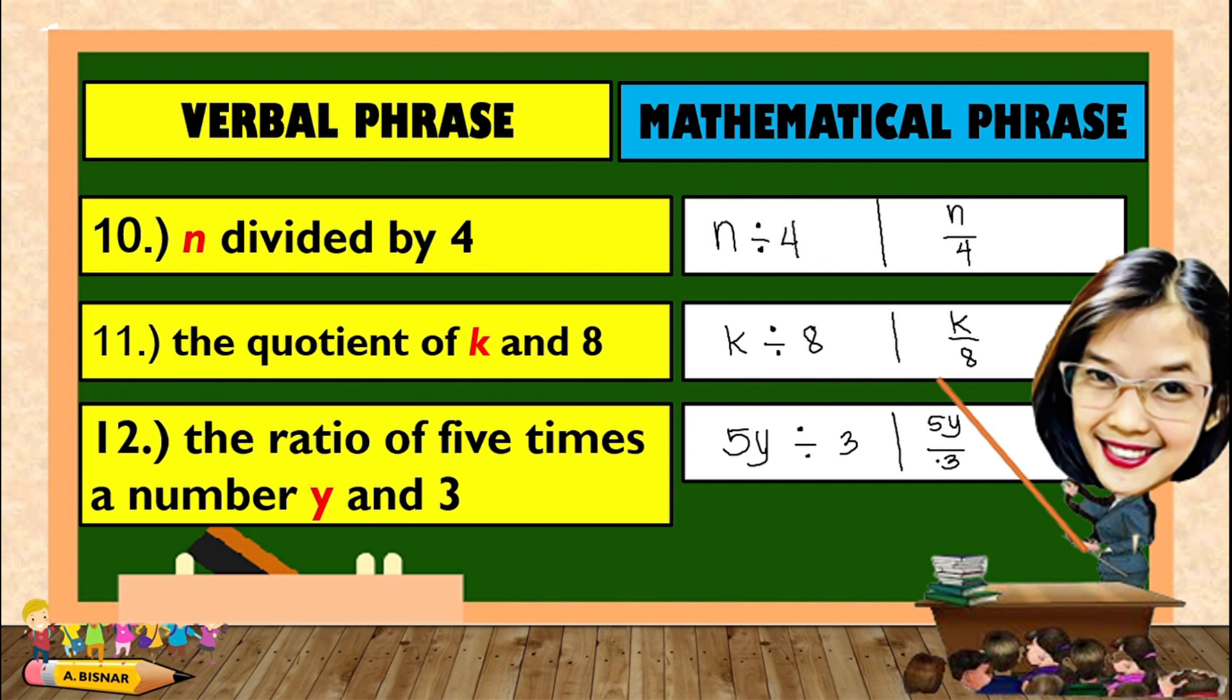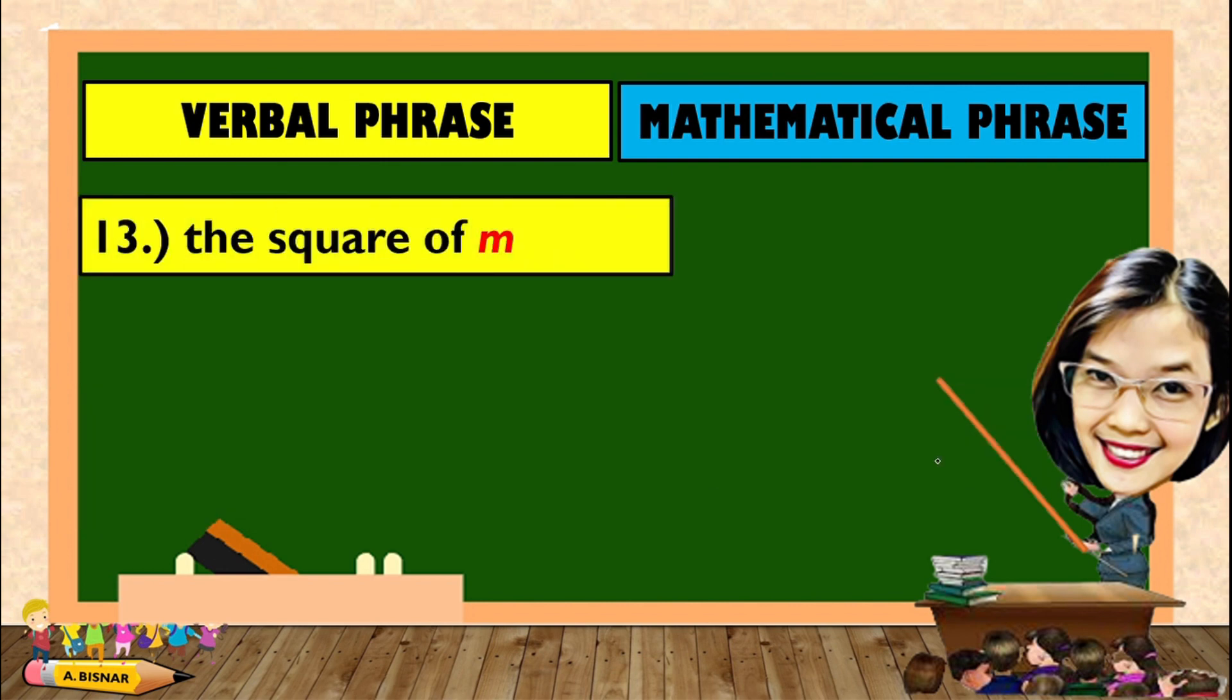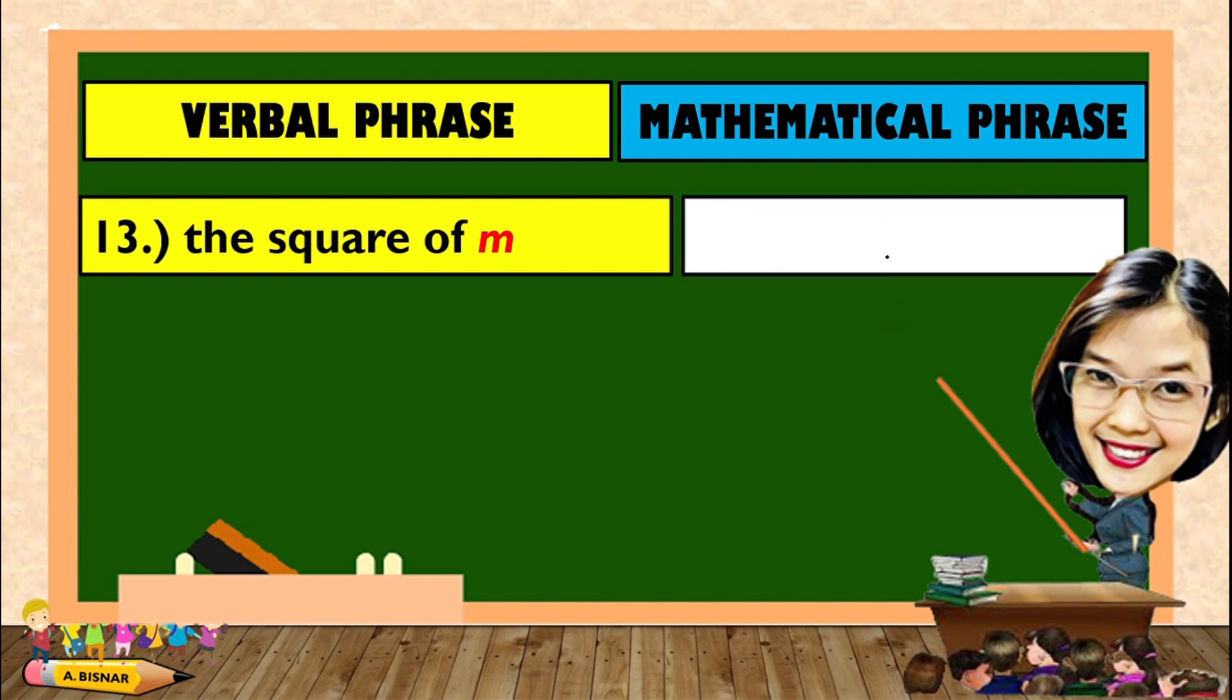So, let us try to add some more. How about this? The square of M. Well, we can write this as M squared. Square means the power or the exponent is 2.